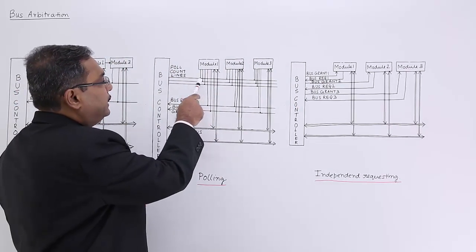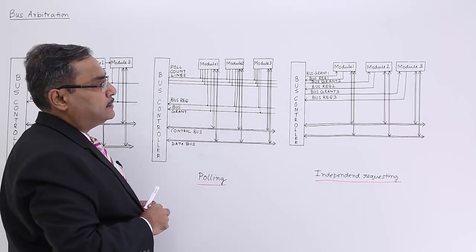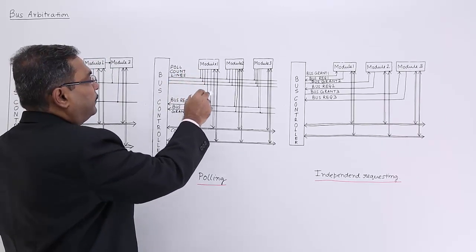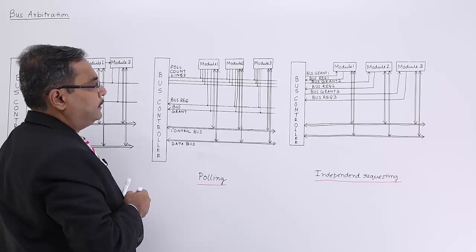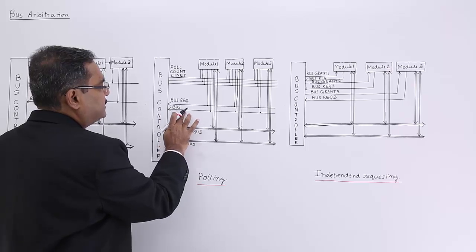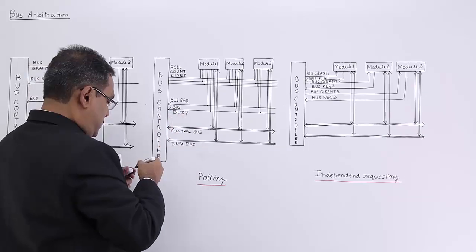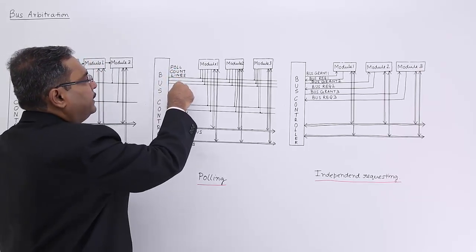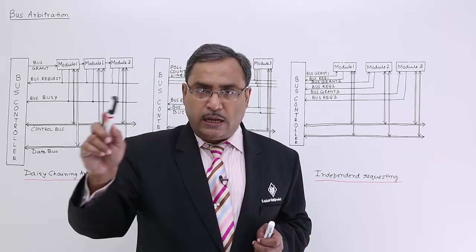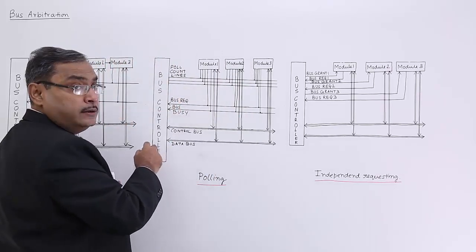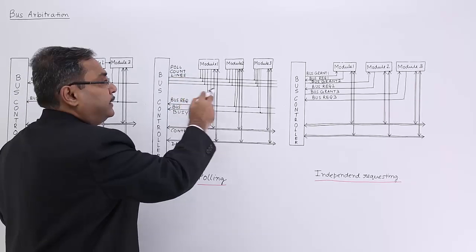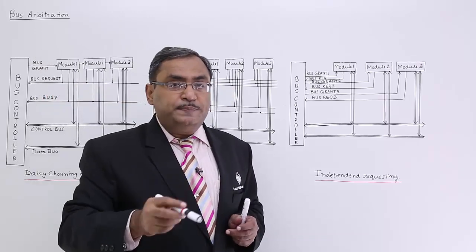This problem has been resolved in polling. In polling, we have multiple poll count lines. When one of the modules enables the bus request line, the bus controller produces a poll count sequence. Here we have three poll count lines, which gives eight combinations. The bus controller puts one of the counting sequences — a three-bit counting sequence — on the poll count lines, and the respective module gets selected.